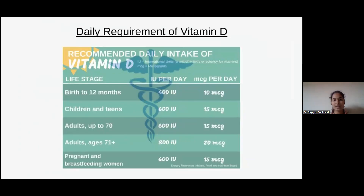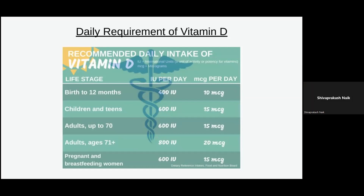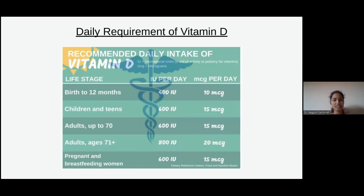Daily requirements of vitamin D: from birth to twelve months it is 400 IU or 10 mcg; children and teens, 600 IU or 15 mcg; adults up to seventy years, 600 IU and 15 mcg; pregnant and breastfeeding women, also 600 IU and 15 mcg; but adults aged more than seventy-one years, 800 IU and 20 mcg.